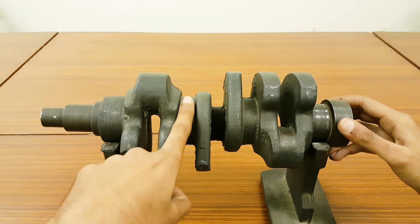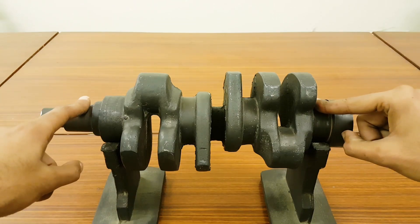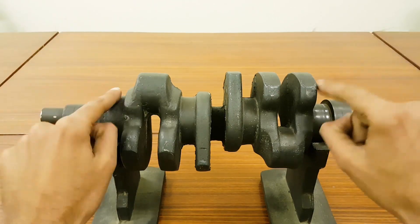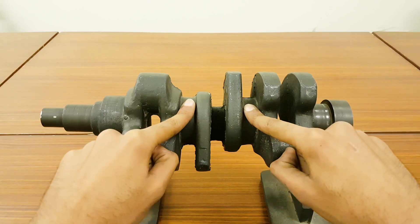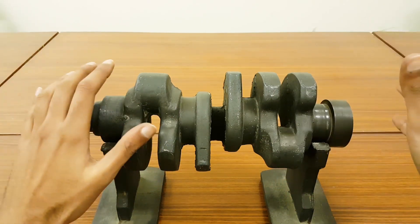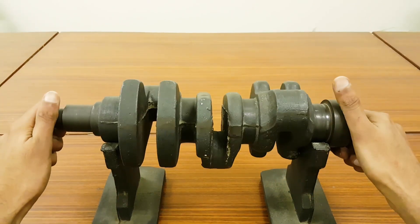However, you can see these main journals are right in the center. Therefore these are polished and by the help of half sleeve bearings this crankshaft gets held into the block.